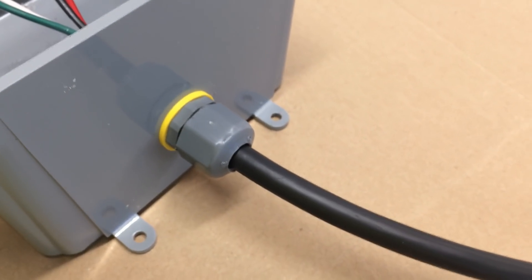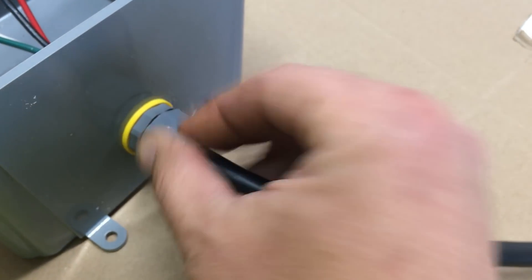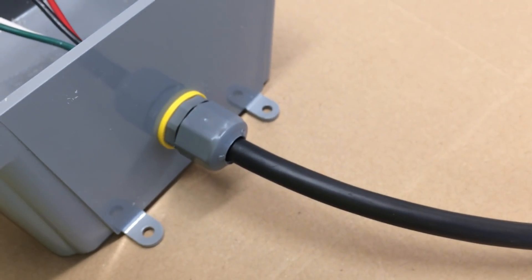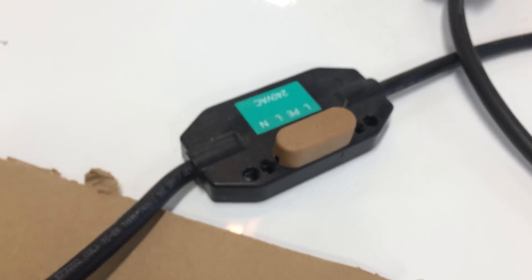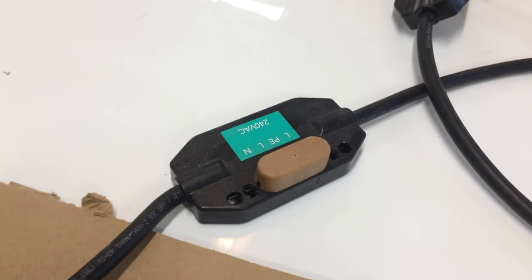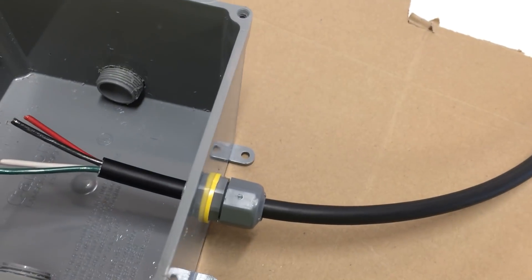This was, I drilled a 3 quarter inch hole, and then I used a half inch water type compression fitting. So the drop cable from the end phase comes through here.